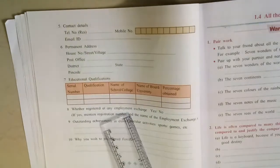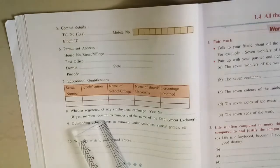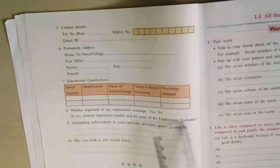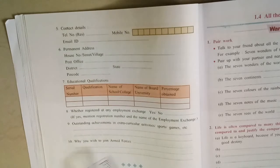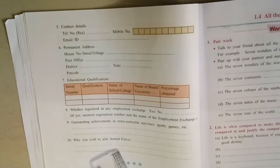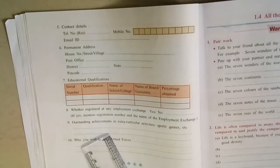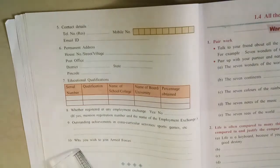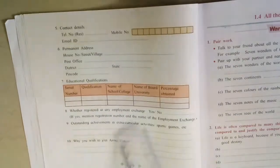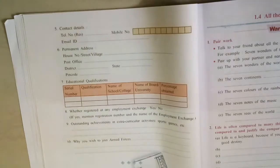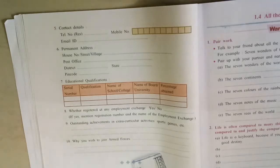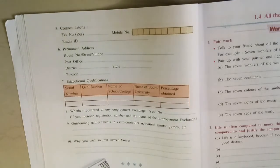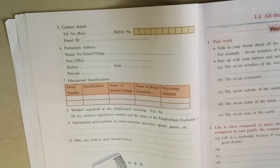Then see, you are given if yes mention registration number and the name of employment exchange where you registered. And outstanding achievements in extracurricular activities, sports, games - that you have to mention. Otherwise you will not get that post. Outstanding achievements means participated and won a gold medal at the interstate hockey championship held in Maharashtra, and district level championship in chess. Whatever you got you write there. And why you wish to join armed forces - that very important. I want to serve my country and its people and provide them a safe and secure environment to live in. Like that you write. It depends on you. Now you complete it whatever had given. Thank you.